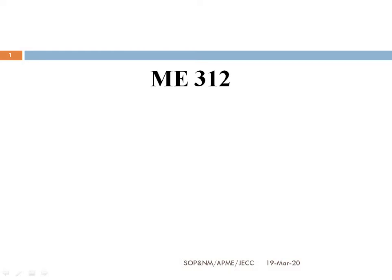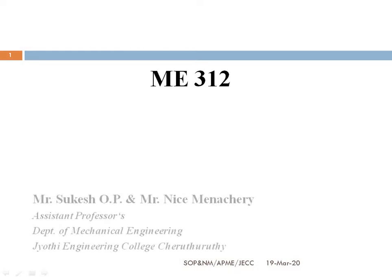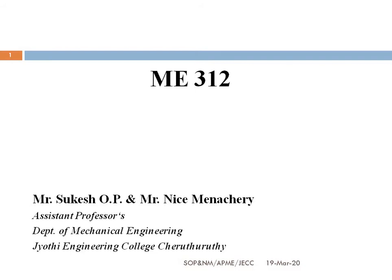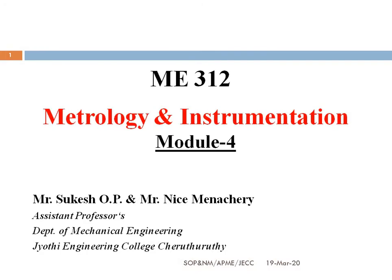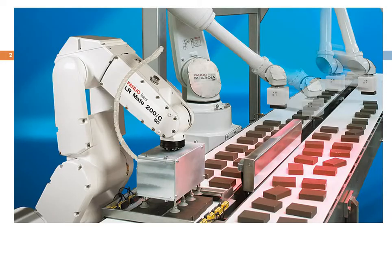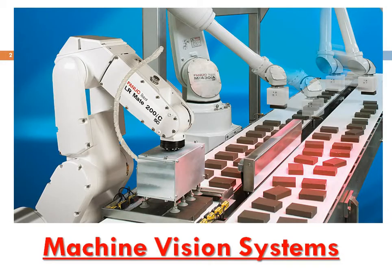Welcome to all. We are going to discuss about the fourth module of Metrology — ME 312 Metrology and Instrumentation. So first of all, we are going to discuss about the topic: machine vision systems.